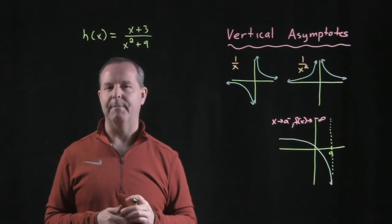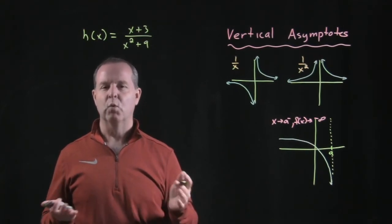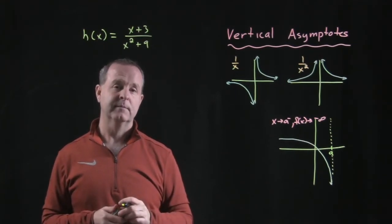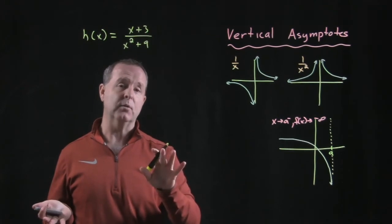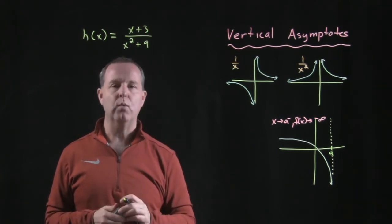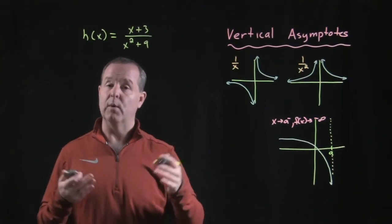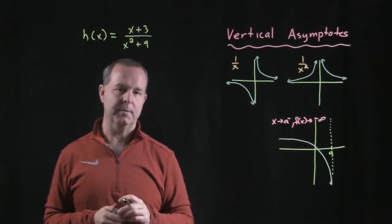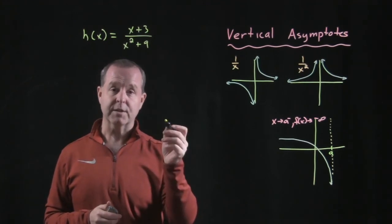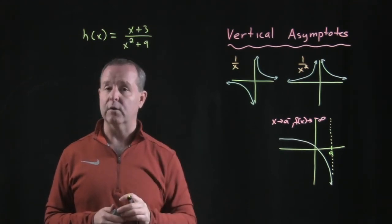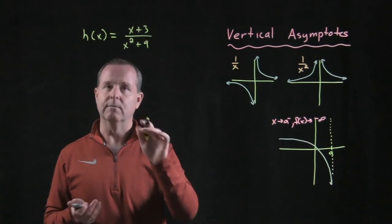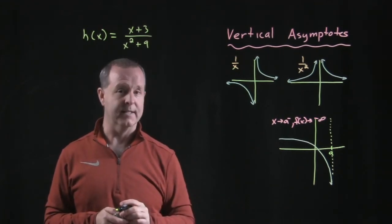So what do you know about our last example here, h of x? What do you know about the denominator? Well, you realize, or I hope that you're able to realize, that there are no real solutions or no real roots to that possible denominator. So when that's the case, there's no vertical asymptotes. So some rational functions do not have a vertical asymptote. Some do. This particular one doesn't.